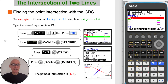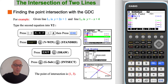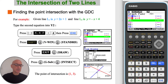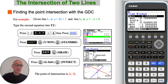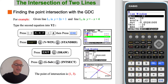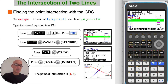To type the second equation into Y2, press the negative button and then the X variable button and then plus 4, and then press Execute to enter the equation. It's usually good to set up standard axes and we can do this by pressing Shift and then F3 for View Window and then F3 again for standard axes, which sets up an X axis from negative 10 to 10 and the Y axis from negative 10 to 10. Then press Exit and then F6 to draw the lines.